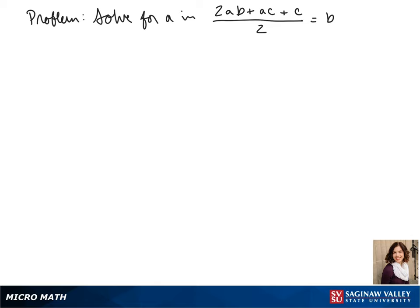Welcome to another day of algebra. Today we're solving for A in 2AB plus AC plus C all over 2 equals B.